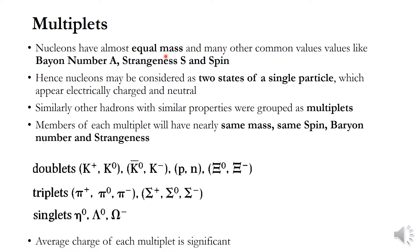For nucleons, the Baryon number is equal to 1, the strangeness is equal to 0, and spin is equal to one-half. Hence, nucleons may be considered as two states of a single particle — one appearing electrically charged and the other electrically neutral. Similarly, other hadrons with similar properties were grouped as Multiplets — a single family.